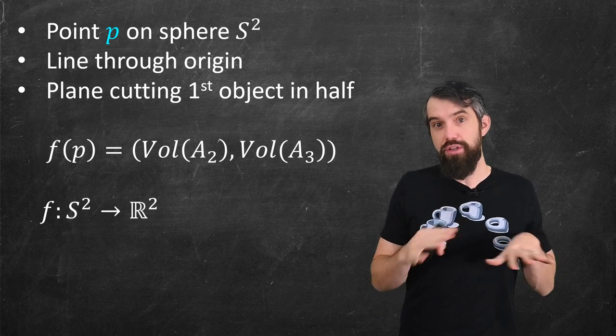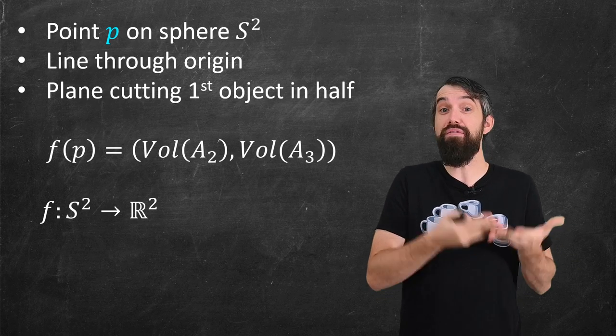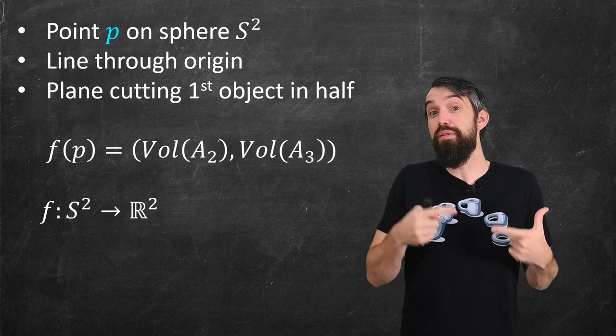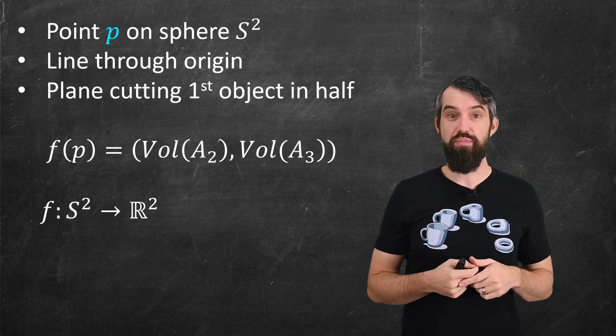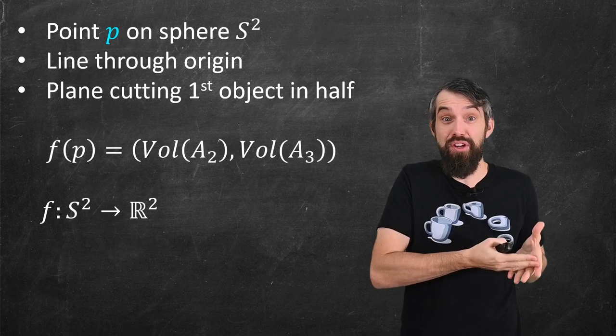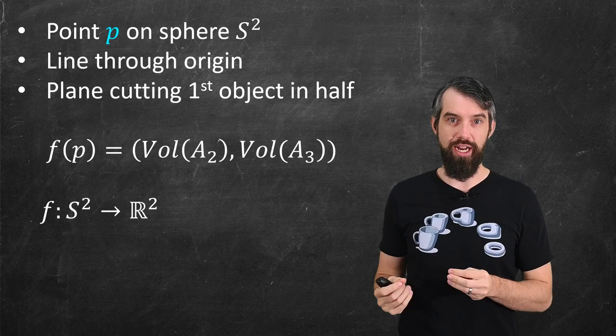And what it does is it just computes the volume of the second object that's on the positive side of the plane, and the volume of the third object that's on the positive side of the plane. These are just numbers, some volumes. And so what I have is a map that goes from the sphere to two-dimensional real space. Its output has two coordinates.